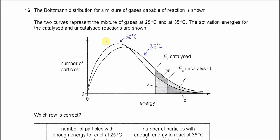Question 16. The diagram below shows the Boltzmann distribution of a mixture of gases. There are two curves representing the mixture of gases at 25 degrees C and 35 degrees C.